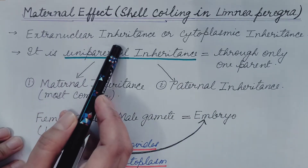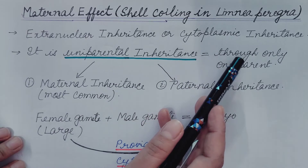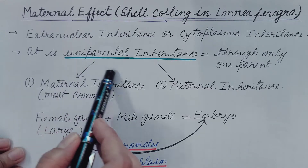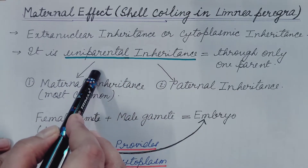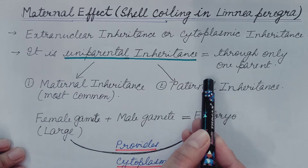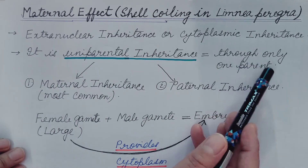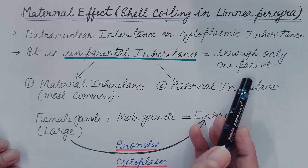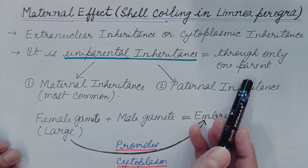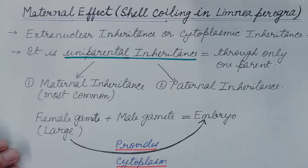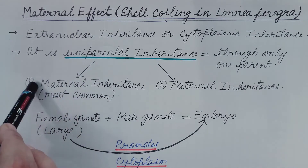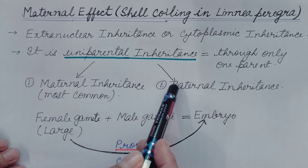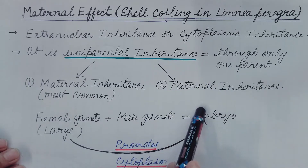We have discussed about extra nuclear inheritance or cytoplasmic inheritance. This extra nuclear inheritance or cytoplasmic inheritance is also known as uniparental inheritance, because the transmission of traits or certain characters takes place through only one parent. There are two types: when transmission takes place through the mother, it is known as maternal inheritance, which is most common, and when it takes place through the father, it is known as paternal inheritance.